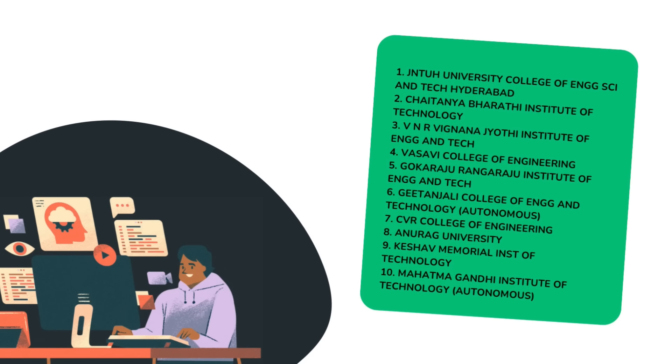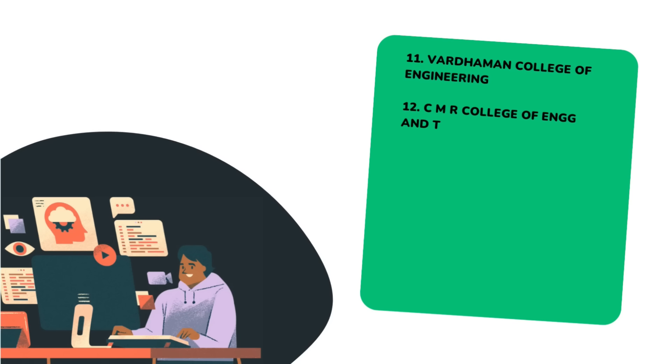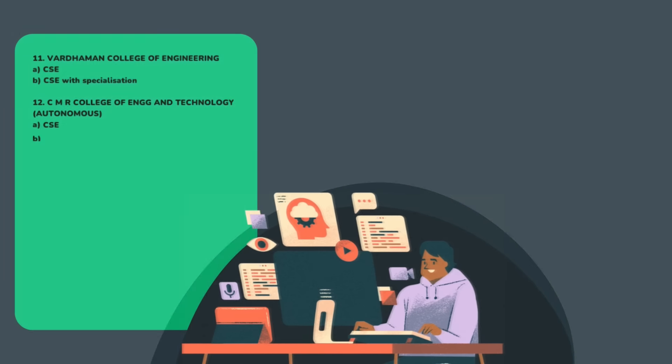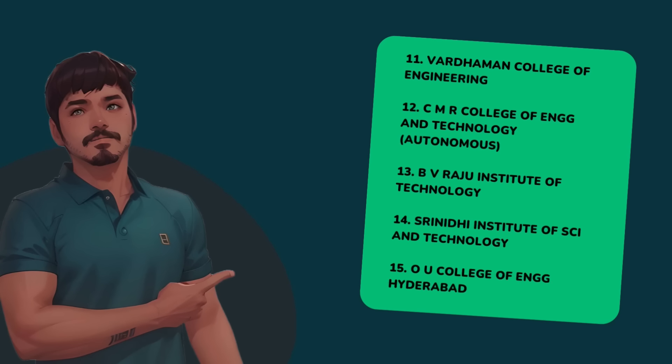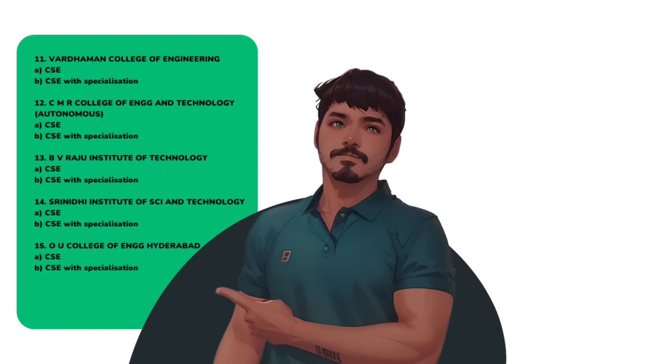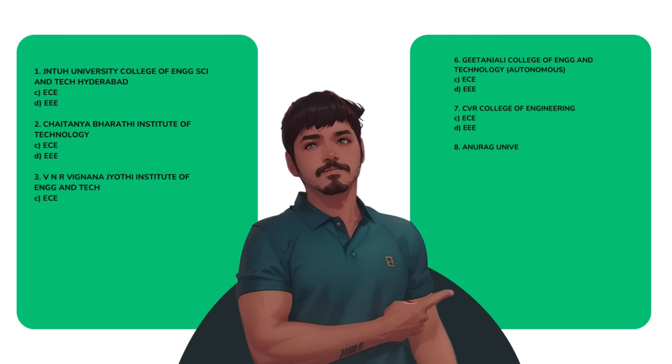That means, first you have to decide ECE and EEE, and after that top 11 to 15 colleges — CSE and CSE specialization. In terms of opportunities and number of placements, they are almost similar. Top 11 to 15 CSE or top 10 colleges ECE and EEE — they are almost similar. But in terms of my personal choice, first go for top 11 to 15 CSE and CSE specialization, and then top 10 colleges ECE and EEE.